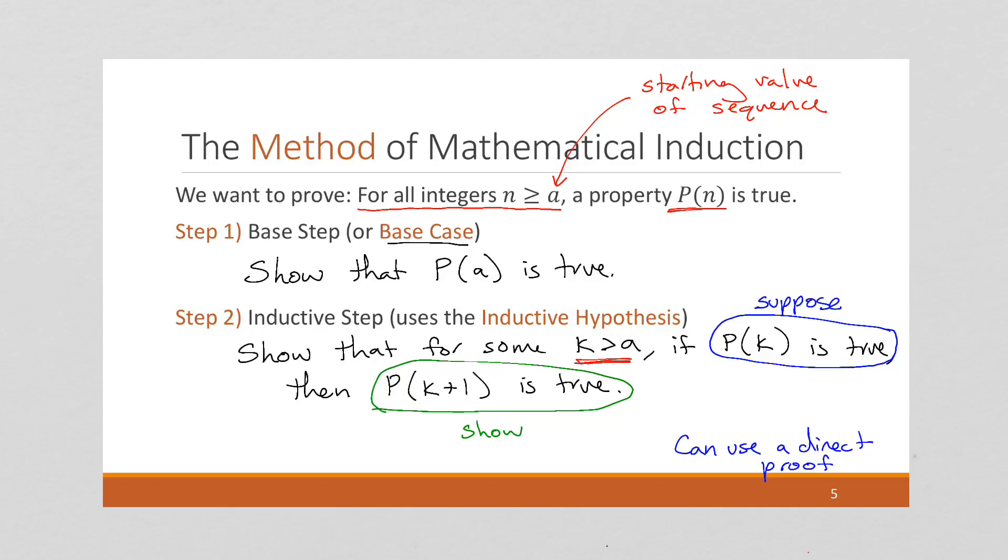And once we've done these two steps, step one, the base case, and step two, the inductive step, we will have proven that that property P of n is true for all elements in our sequence, even if it's an infinite sequence.